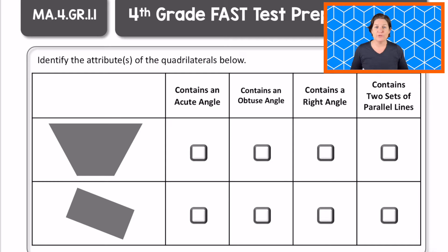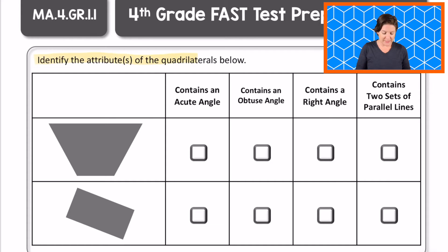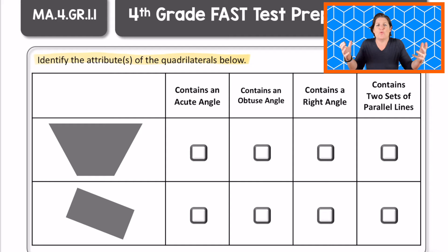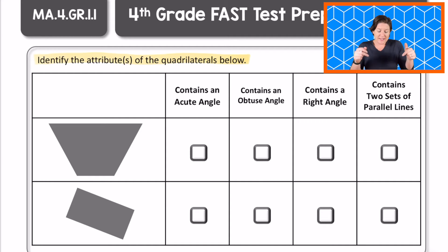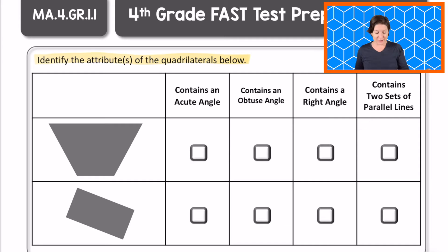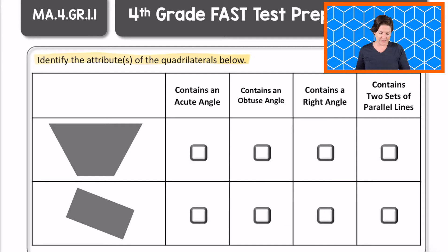Welcome back, fourth grade. Let's go over this one. So it says to identify the attributes of the quadrilaterals below. What does quadrilaterals mean? It means that it is a figure with four sides. A quadrilateral must have four sides.